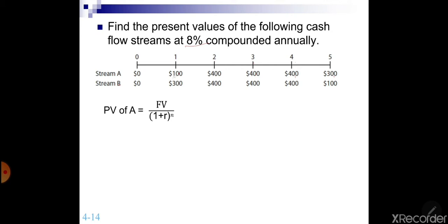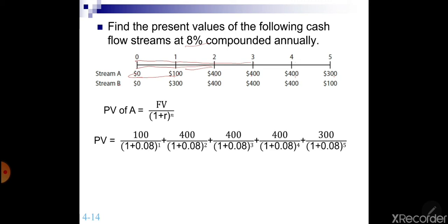That means this 100 will go back one year. The second 400 will go back two years. One and two. Similarly, the third 400 will go back three years and so on. So if we look at the solution, it means you will solve it this way. The first 100, because it is coming back one year, you have power 1 over here. The second 400, because you are bringing it back two years, has power 2 and so on.